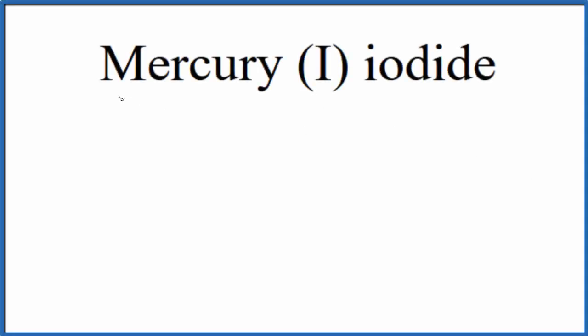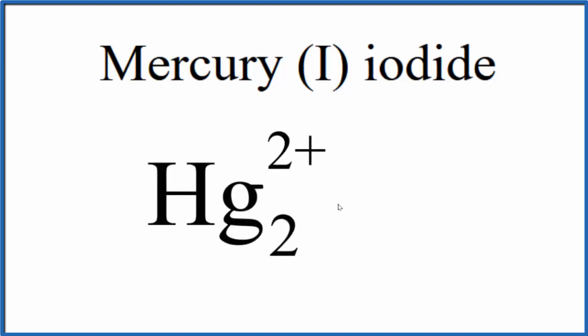In this video we'll write the formula for mercury one iodide. We need to realize that when we look at this mercury one, it's kind of a special exception. You can consider it a polyatomic ion. When you see mercury one, you're thinking Hg2 two plus.